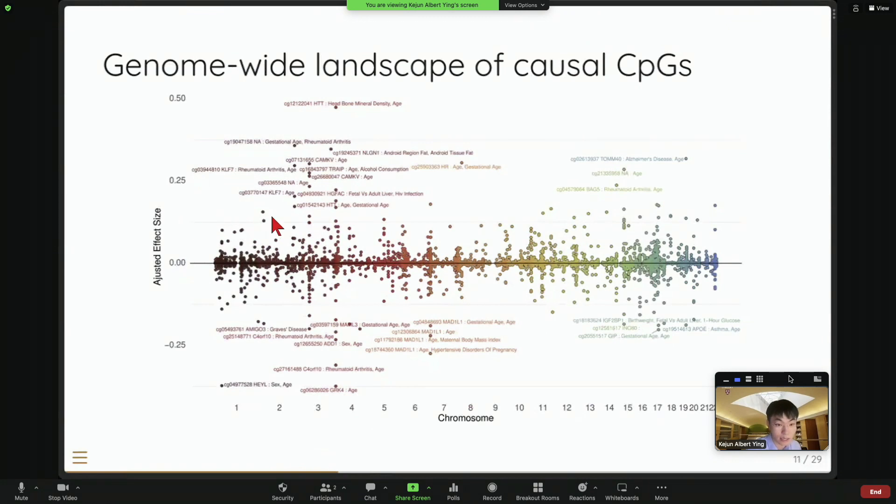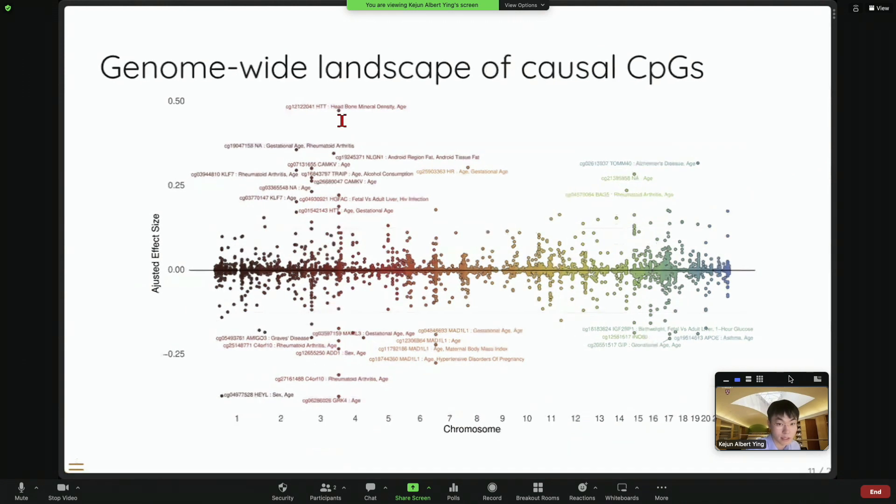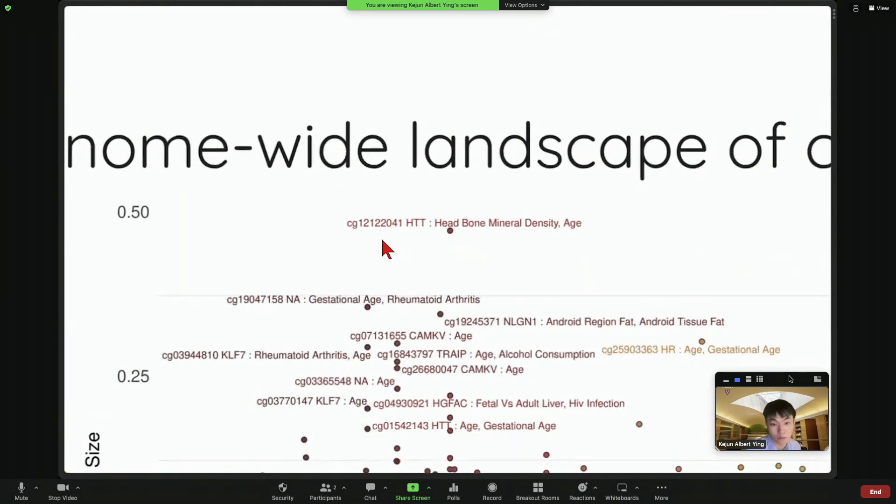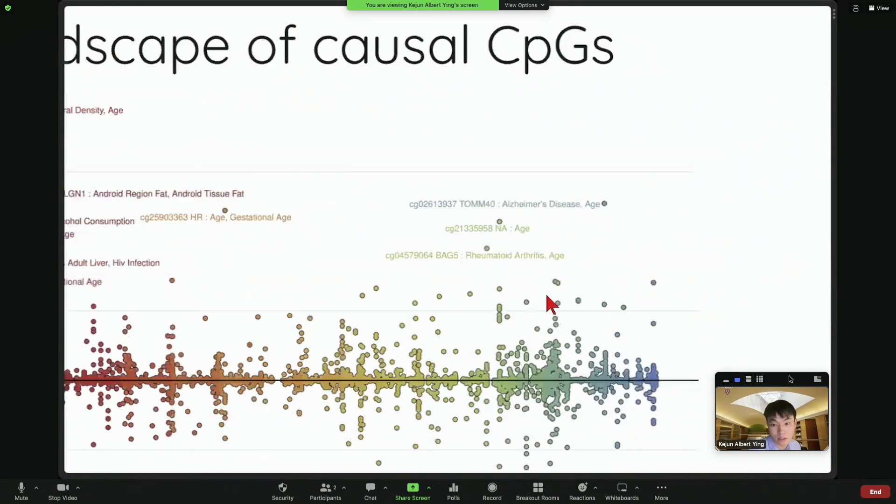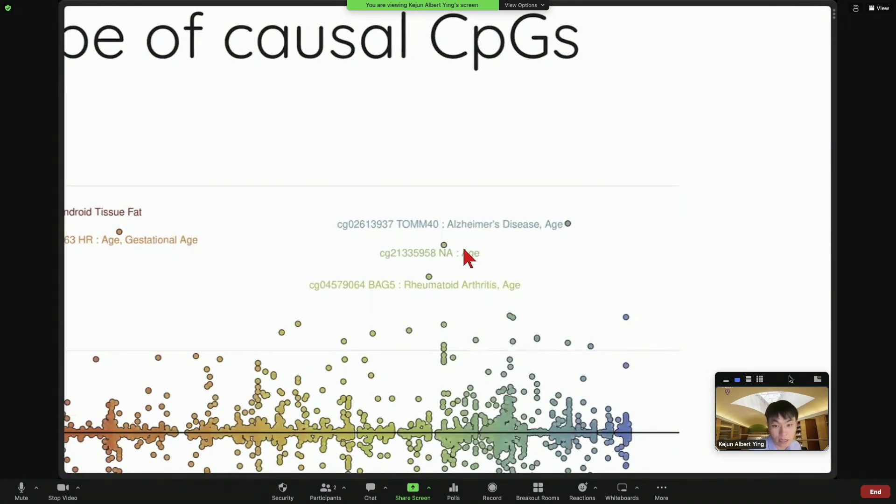So this is what our results look like. So each dot here is a DNA methylation site. And you can see our top hit is actually the CG12 something in the Huntington locus. And the previous EWAS study shows that it's related to hip bone mineral density. And our result shows that this methylation site has strongest positive causal effect on lifespan. So basically, if you have higher methylation on this site, it's more likely to cause you to live longer and so on. And similarly, you can see there are really different kinds of methylation sites and different kinds of mechanisms.